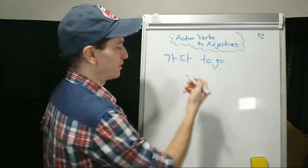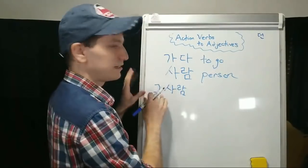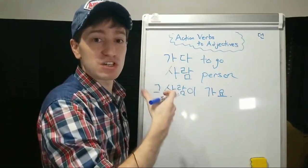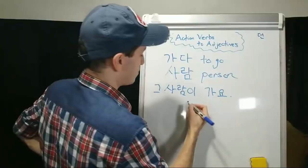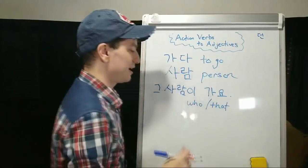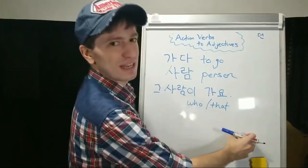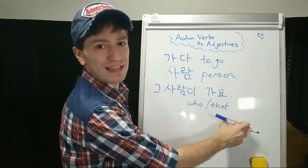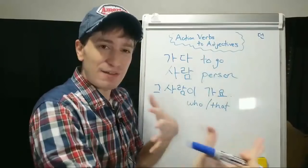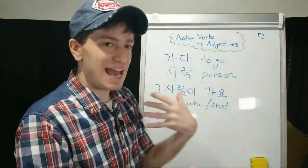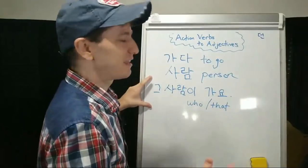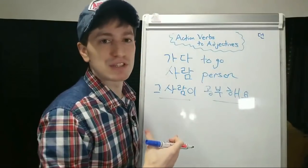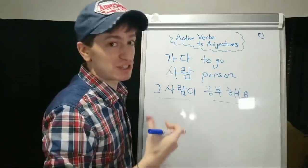We want to combine this with a noun: 사람, person. We could say something like 그 사람이 가요 — that person goes. But what if we wanted to say a person who goes? In English we have words like 'who' or 'that' — like a building that is in Korea, a person who likes 김치, a person that goes to Korea, a person who studies Korean. You can have all these ways to combine verbs and nouns. You could say 그 사람이 공부해요 — that person studies. What if we wanted to say I like people who study Korean, or I don't like people who study Korean?